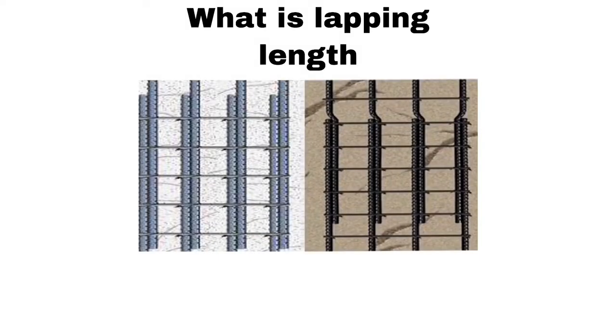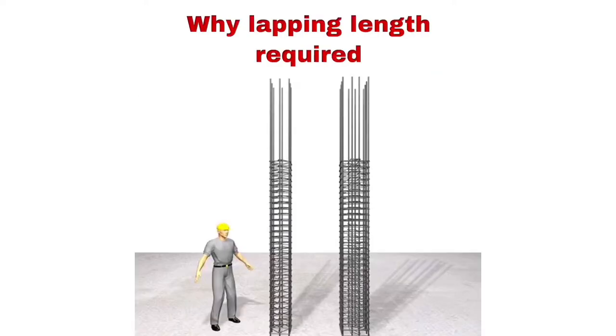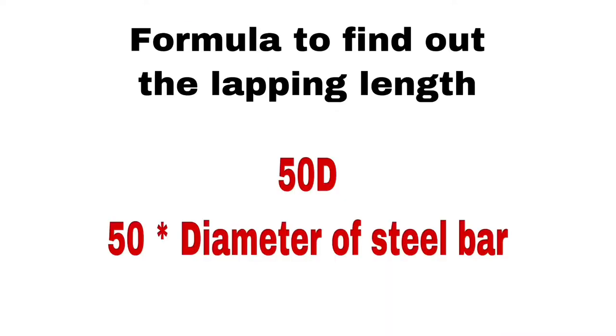What is lapping length? If length of steel bar is not enough to keep the reinforcement, we have to lap two steel bars. So lapping length means overlapping of two bars. Why is lapping length required? Lapping length is required to safely transfer stress from one bar to another. Normally lapping length is 50D, which means 50 into diameter.